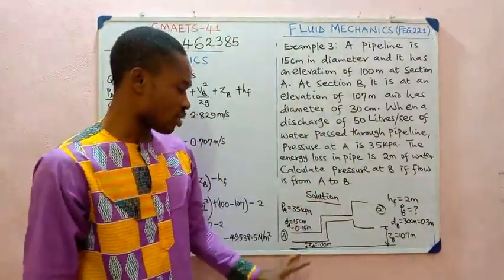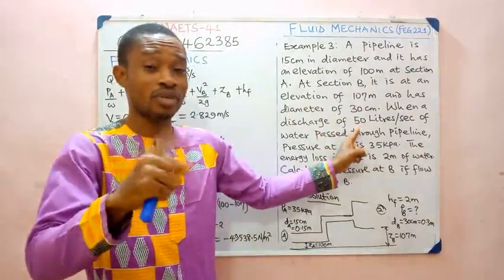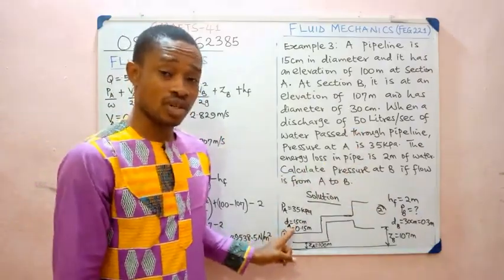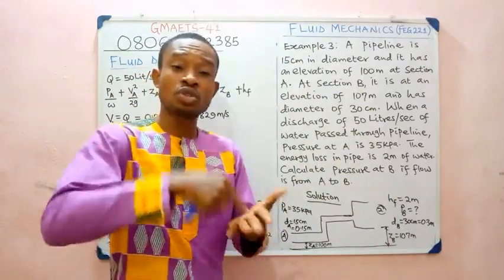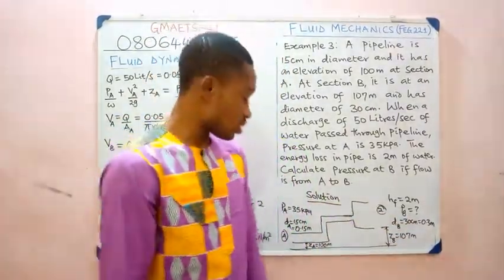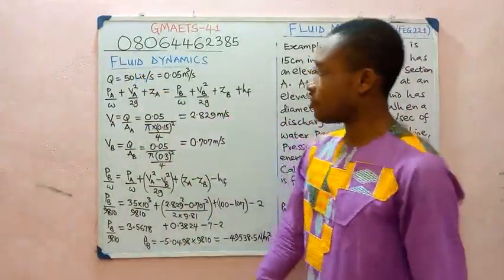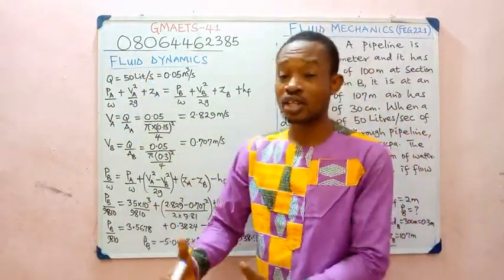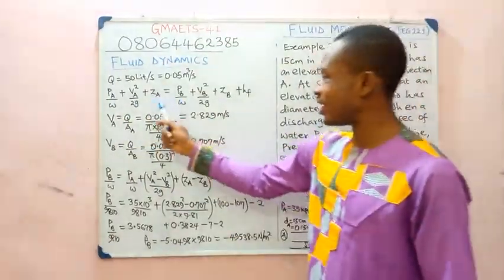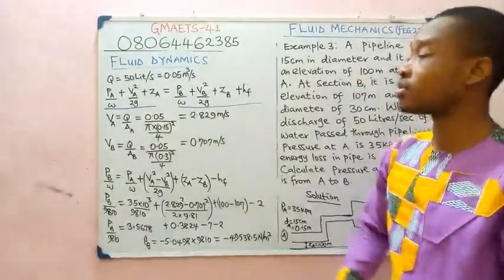Writing Bernoulli's equation with energy loss: PA/W + VA²/2g + ZA = PB/W + VB²/2g + ZB + HF, where HF = 2 m. The sum of inlet energies equals the sum of outlet energies plus the head loss. We know PA = 35 kPa and specific weight W = 9.81 kN/m³.